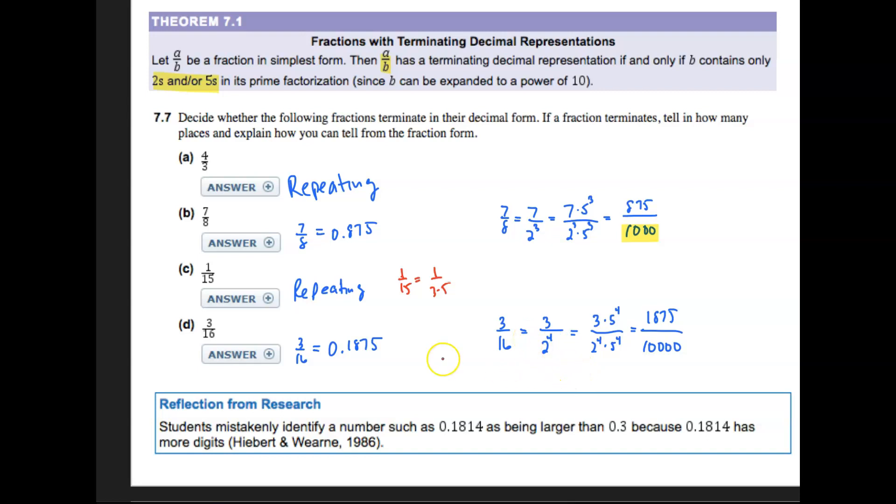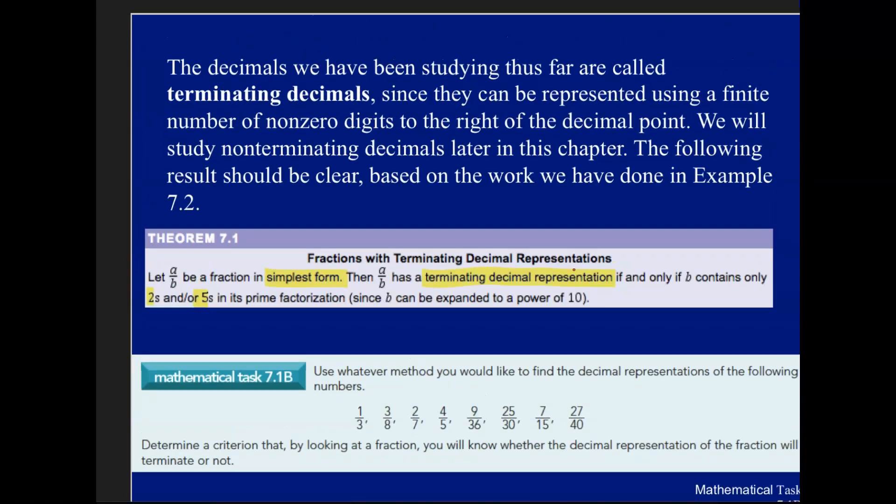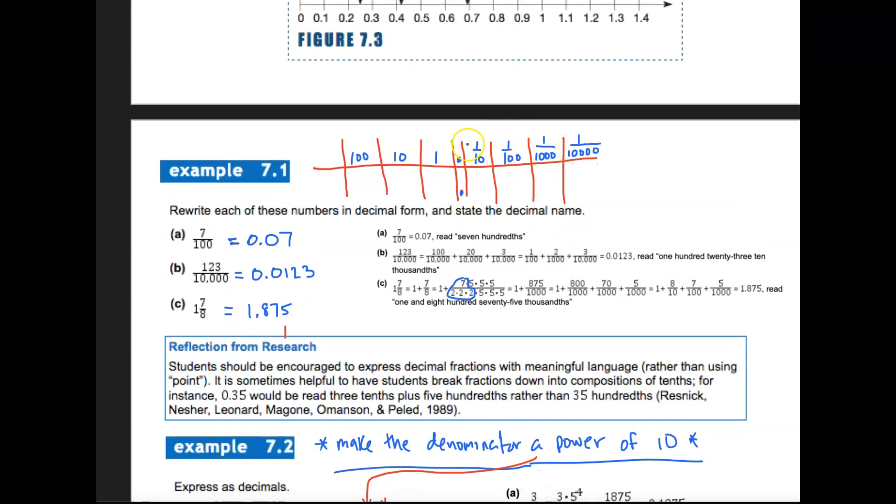So an important idea of why decimals terminate has to do with what's in the denominator. It has to be a power of 10 because they match up with our base 10 notation.